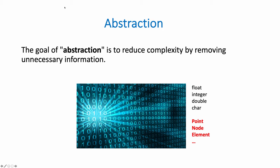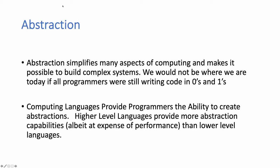Yesterday, we were even happier because we now get to bring our own abstractions into the language. We can deal with points, nodes, and elements. So abstraction has simplified many aspects of computing, and it makes it possible to build complex systems. We would not be where we are today if all programmers were still writing code in zeros and ones. Computing languages provide programmers the ability to create these abstractions, and higher-level languages provide more capabilities, albeit at the expense of performance, than lower-level languages.